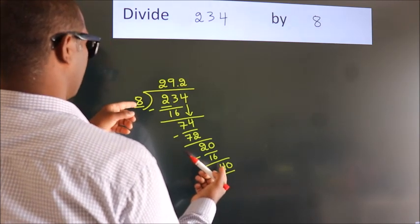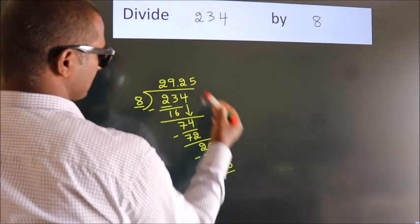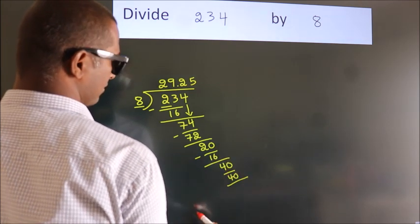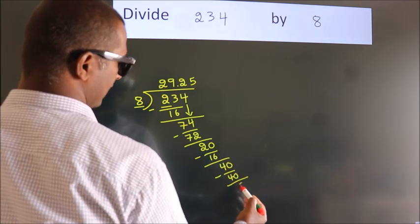In the 8 table, 8 fives, 40. Now we subtract. We get 0.